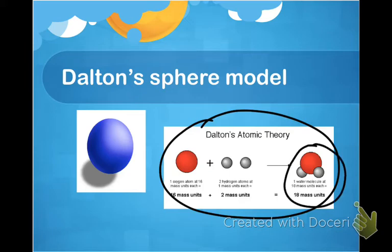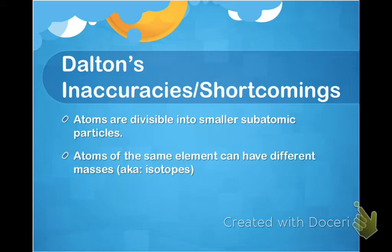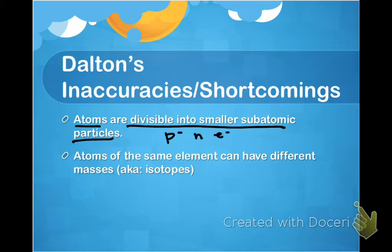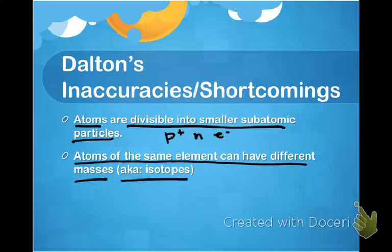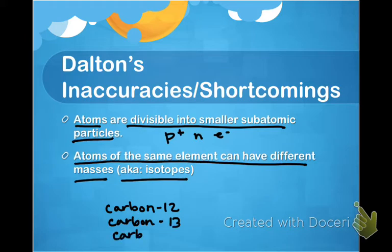What were his shortcomings? Well, science and technology really wasn't on his side — it was going to be almost 100 years before another scientist came along to improve his theory. Atoms are actually divisible into smaller subatomic particles: protons, neutrons, and electrons — he thought atoms were just solid spheres. Also, atoms of the same element can have different masses; this is what we call isotopes. For example, carbon can have a mass of 12, 13, or 14, based on a difference in neutron count.